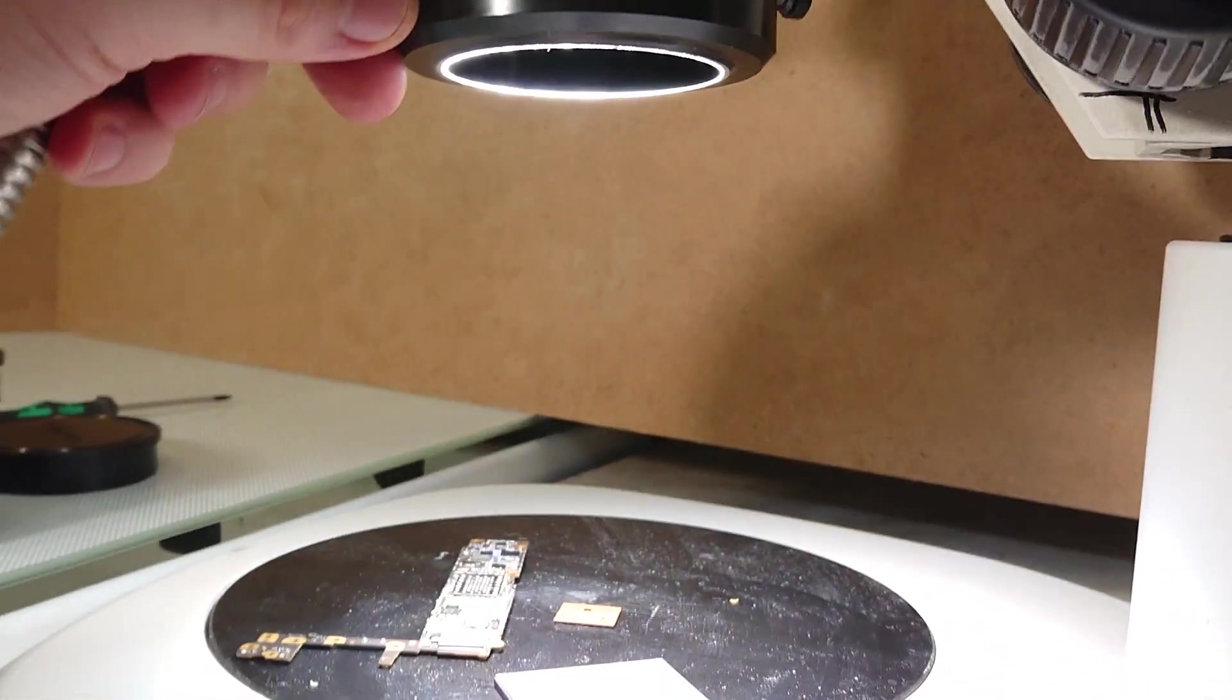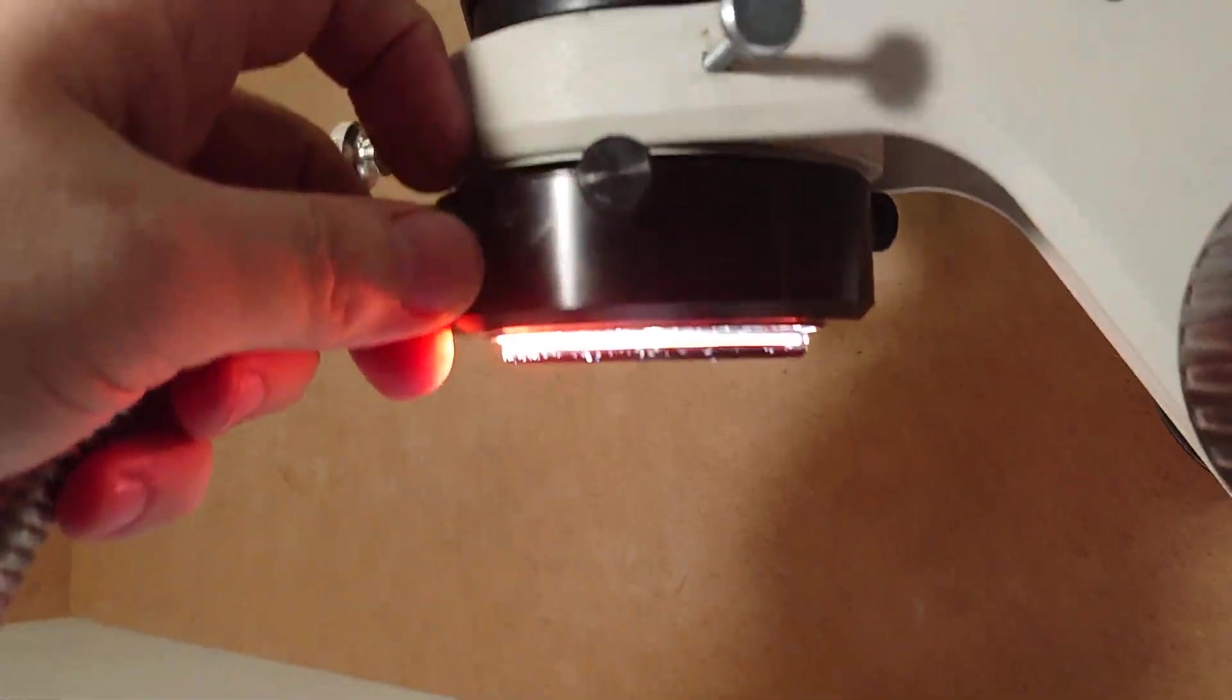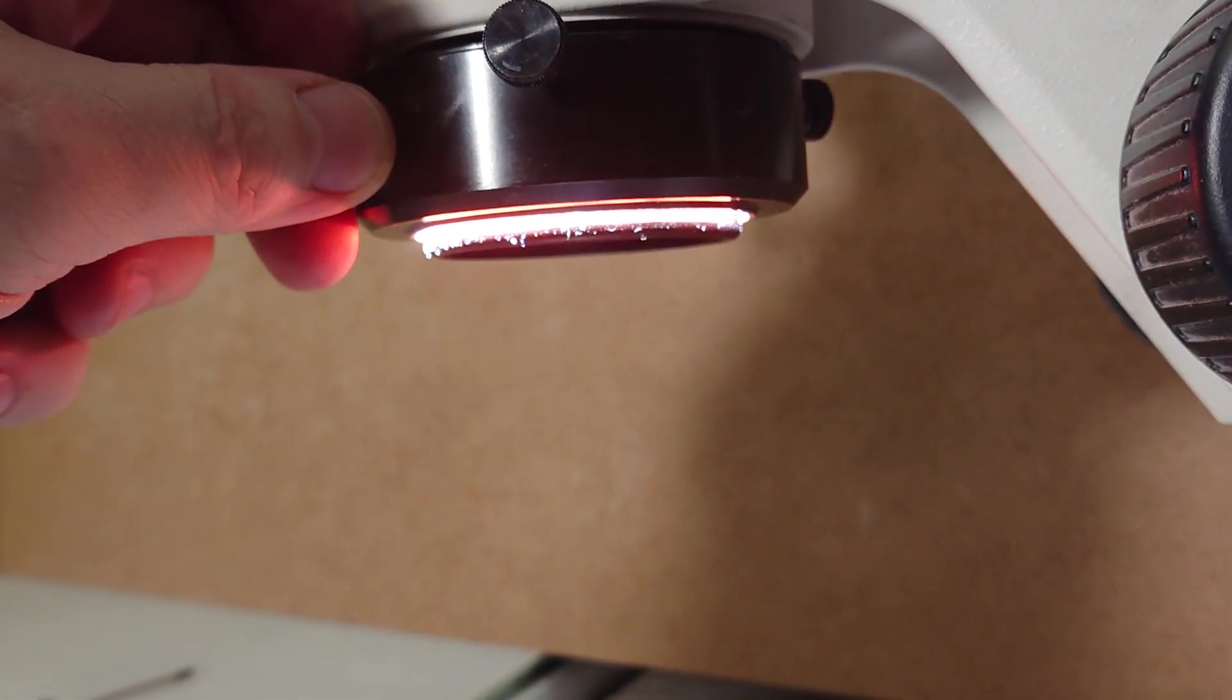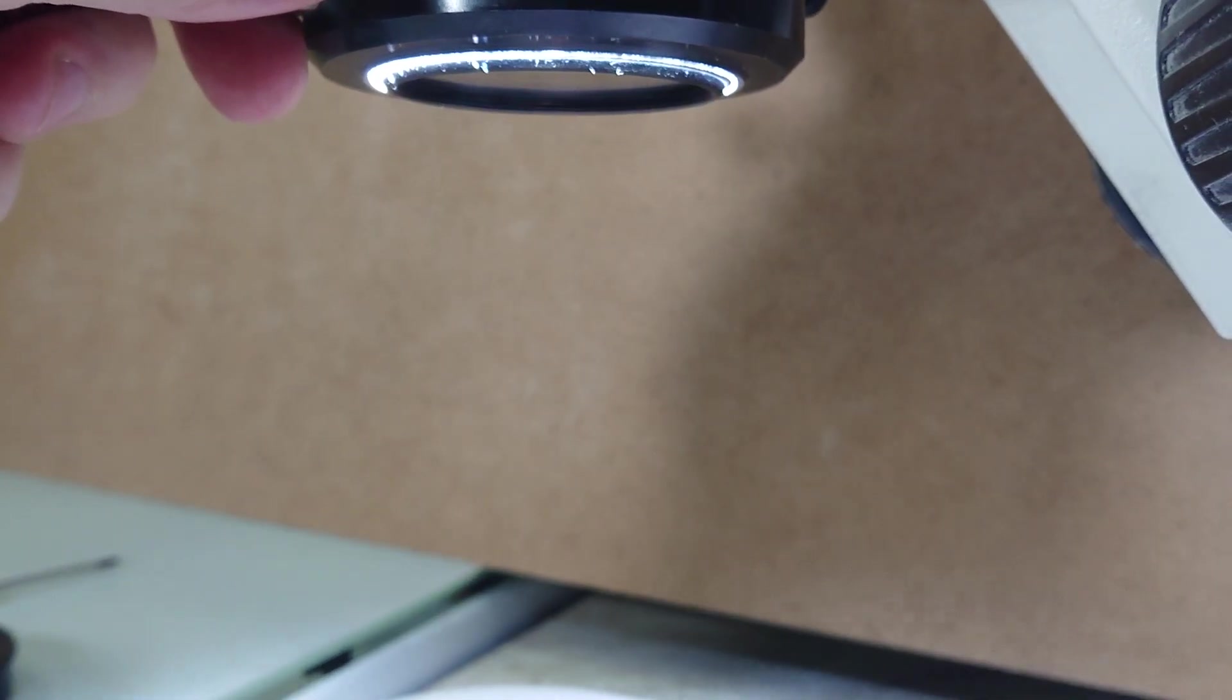And as you might have known, when we use fiber optic ring lights, we can lift it over the lower edge of the objective.